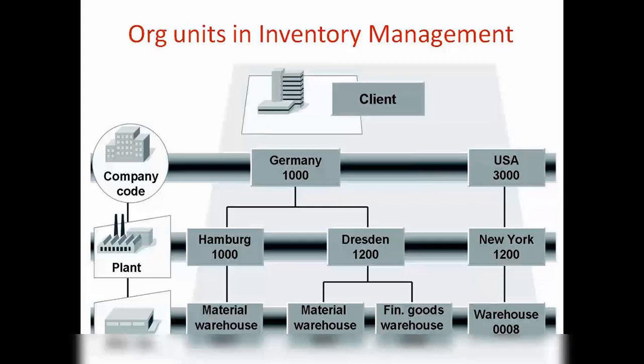We can have more than one storage location, or we can have only one, but this is mandatory — you need to create at least one. For example, you can create storage location 0001 for goods that are received but waiting for testing or quality checking, and then 0002 for goods that are already checked and quality is okay, and we can put that into our stock. I will show you some practicals in a minute.